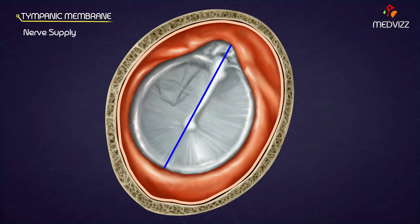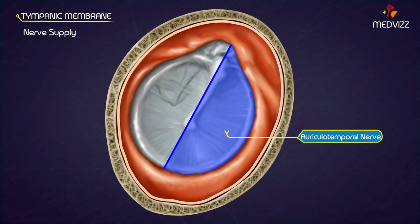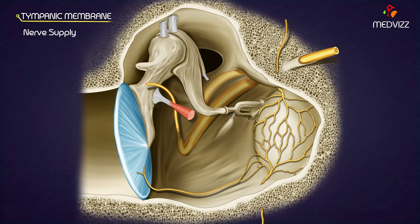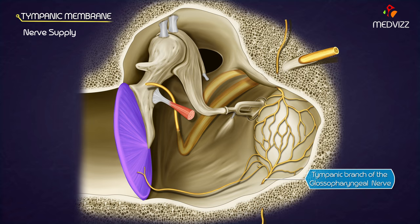Nerve supply. The anterior half of the lateral surface is innervated by the auriculotemporal nerve. The posterior half of the lateral surface is innervated by the auricular branch of the vagus nerve. The medial surface is innervated by the tympanic branch of the glossopharyngeal nerve via the tympanic plexus.